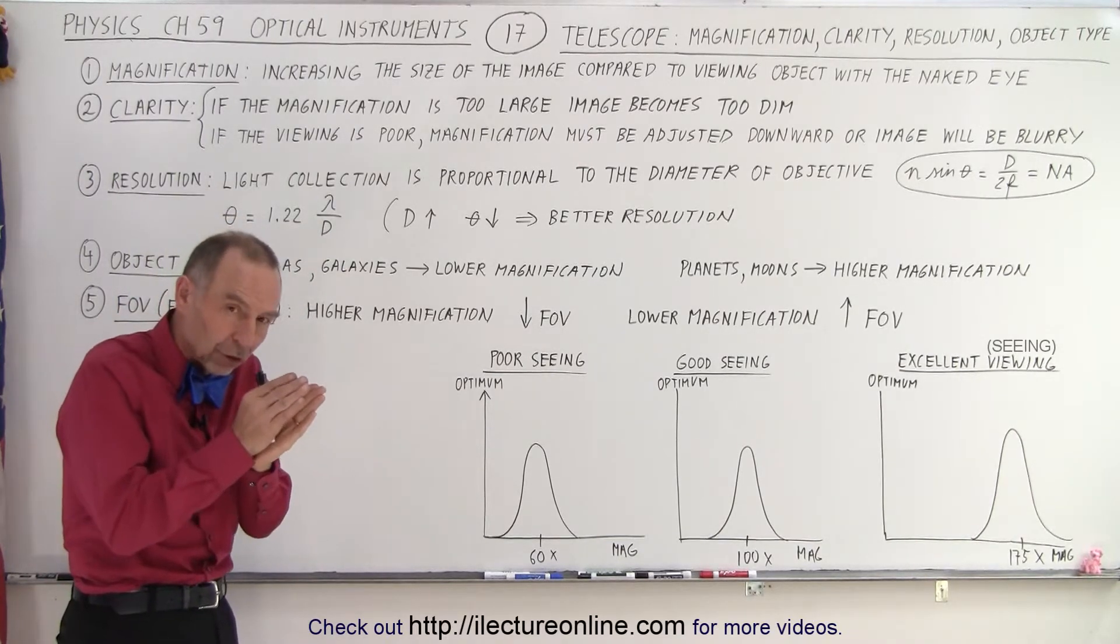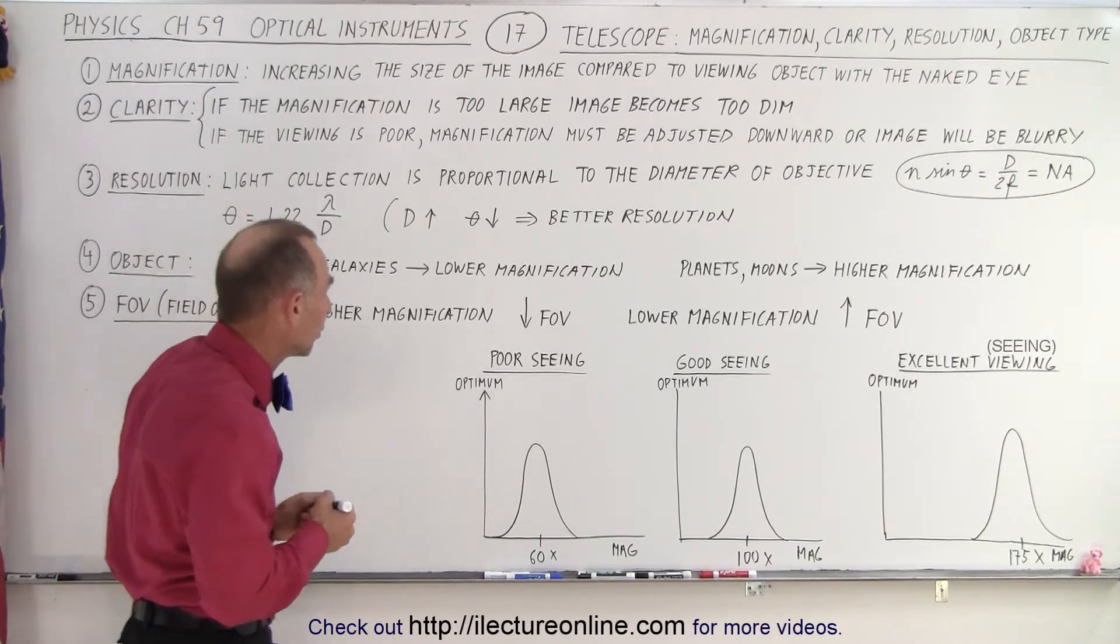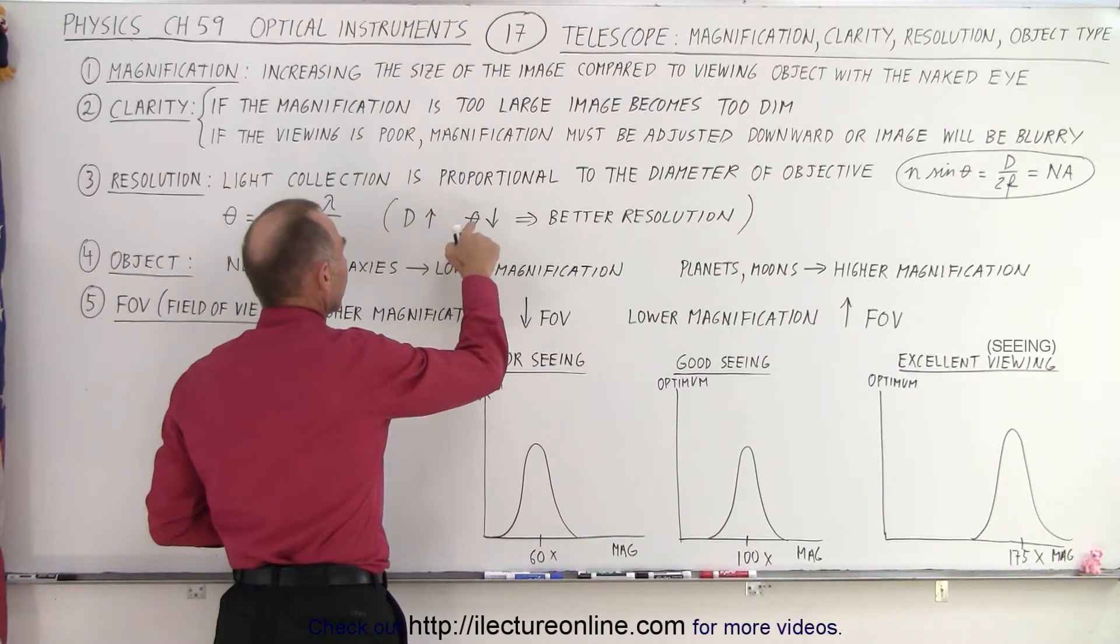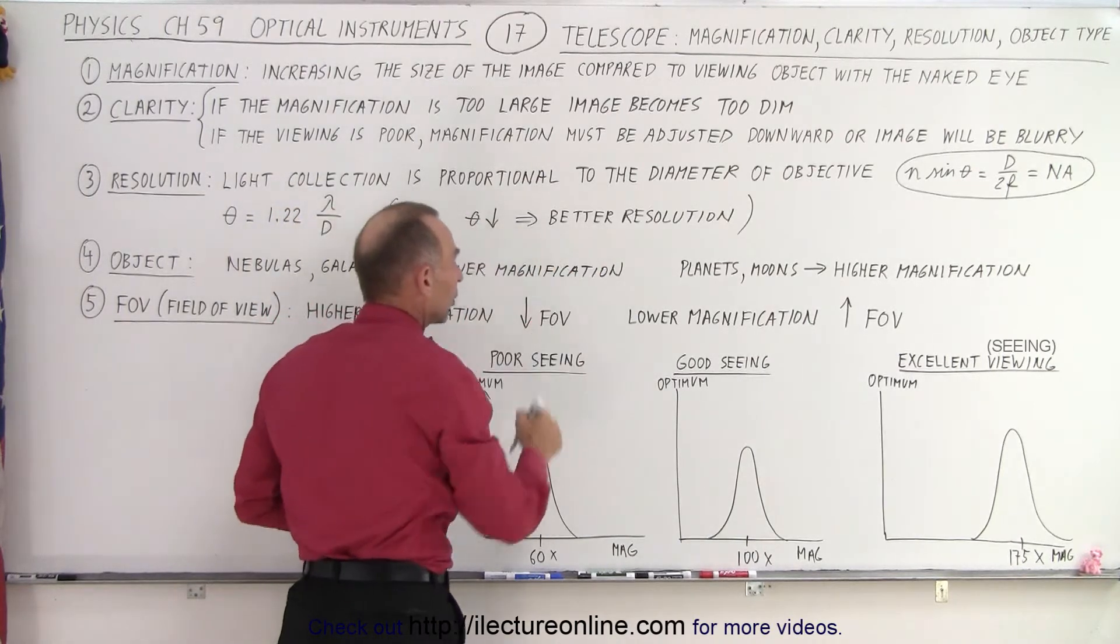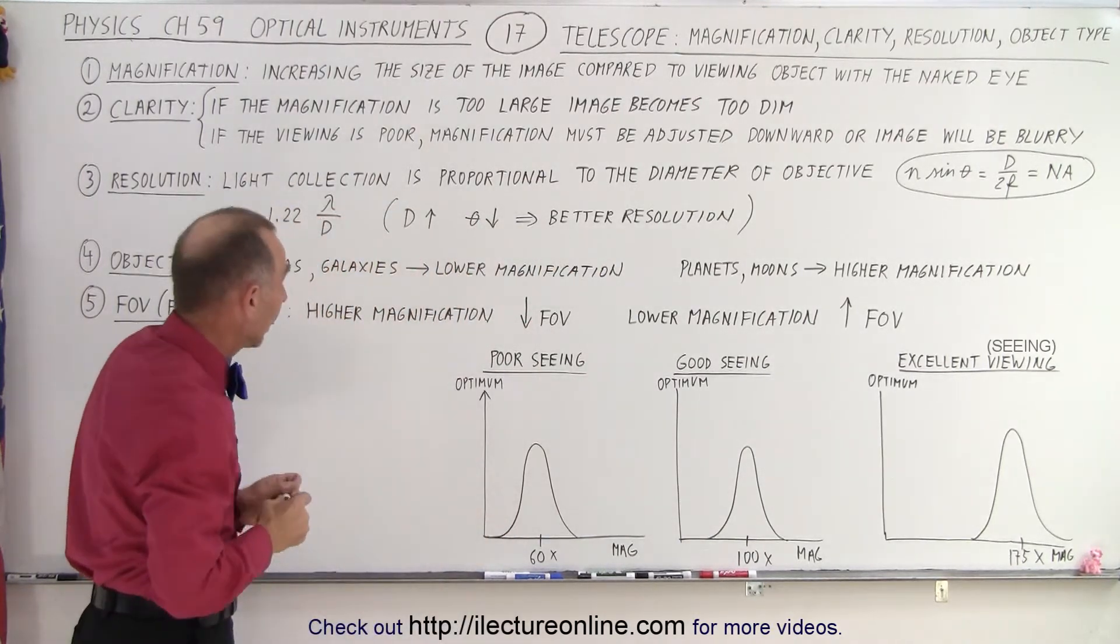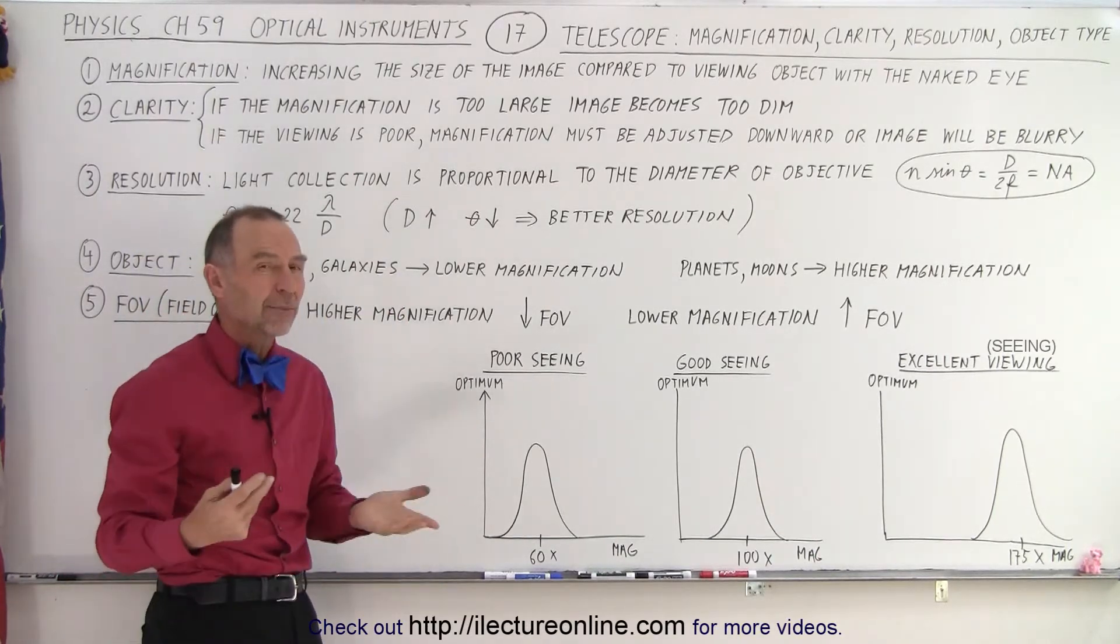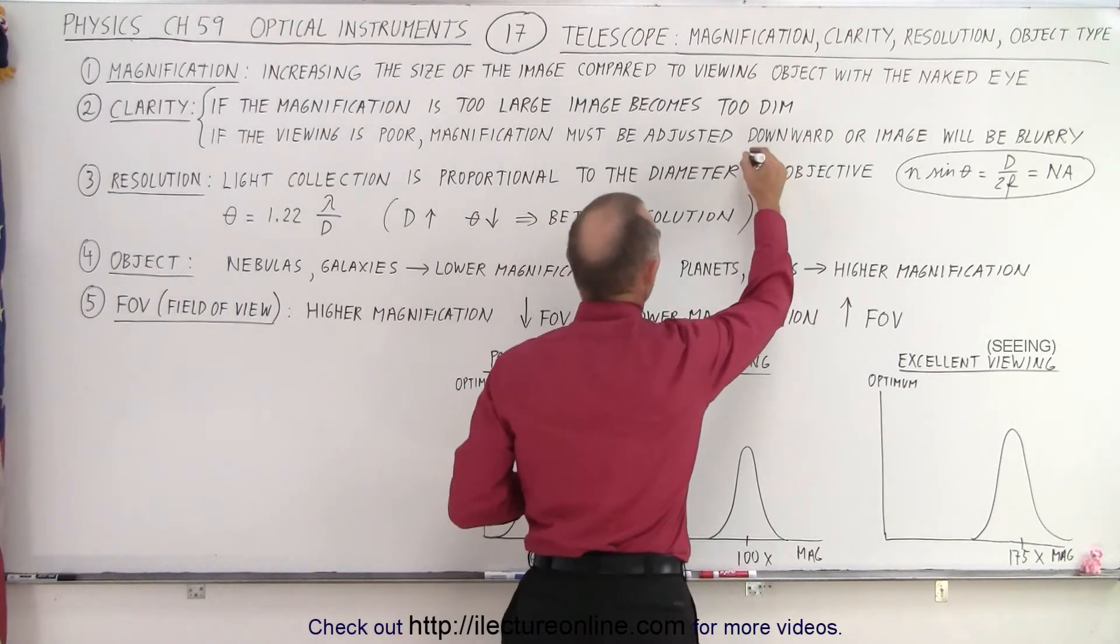You want to be able to discern the smallest possible object at the smallest possible resolution angle. So in this case, a larger diameter is a smaller resolution angle, which is what we call better resolution. And also, the amount of light you can collect is proportional to the diameter of the object. Actually, it's proportional to diameter squared.